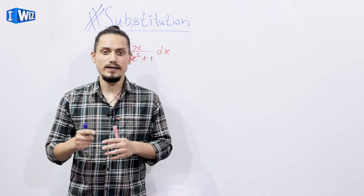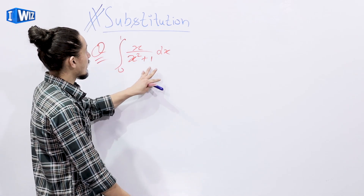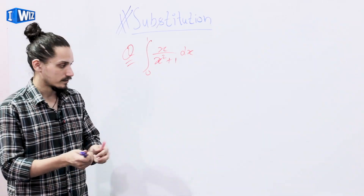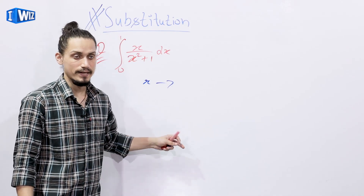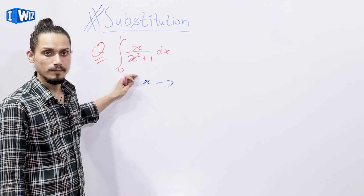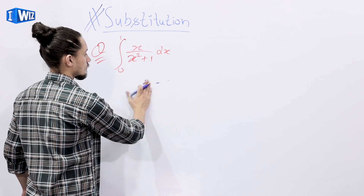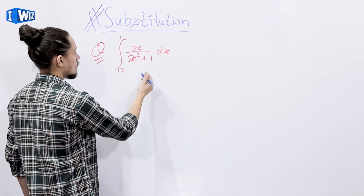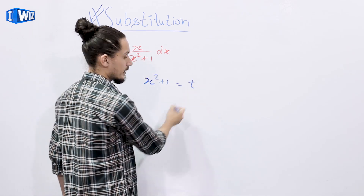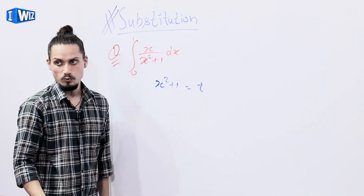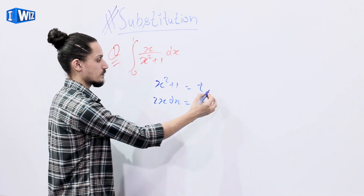Now we will solve some definite integrals by the method of substitution. We have already studied the method of substitution, but in the case of definite integrals, when we change the x variable to t, since we have limits in a definite integral, if we change the variable, the limits will also change accordingly.